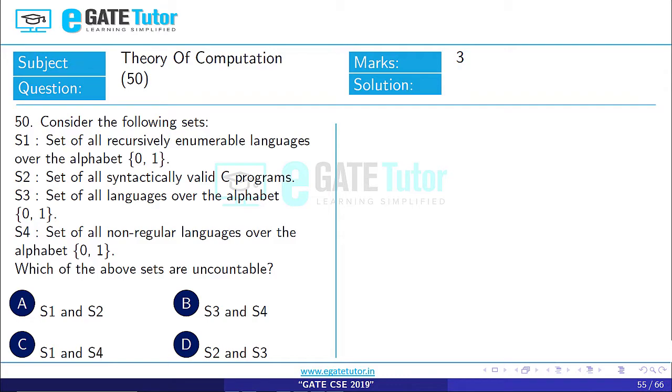Question 50 is from the subject Theory of Computation. Consider the following sets: S1 is the set of all recursively enumerable languages over the alphabet {0, 1}. S2 is the set of all syntactically valid C programs.